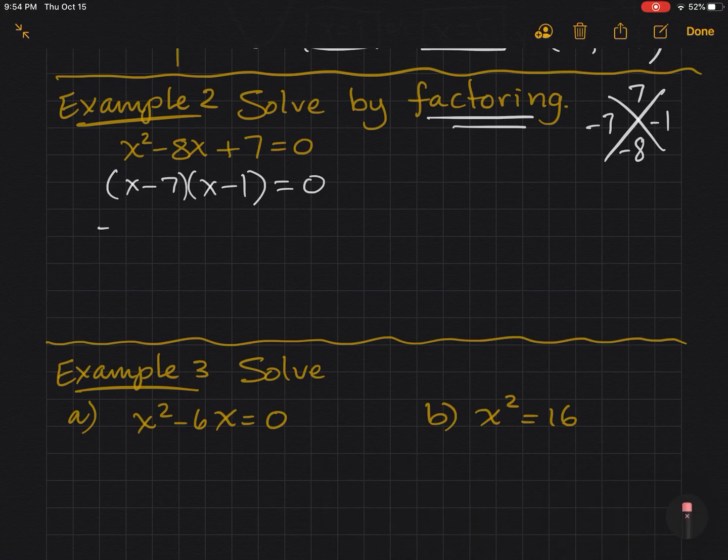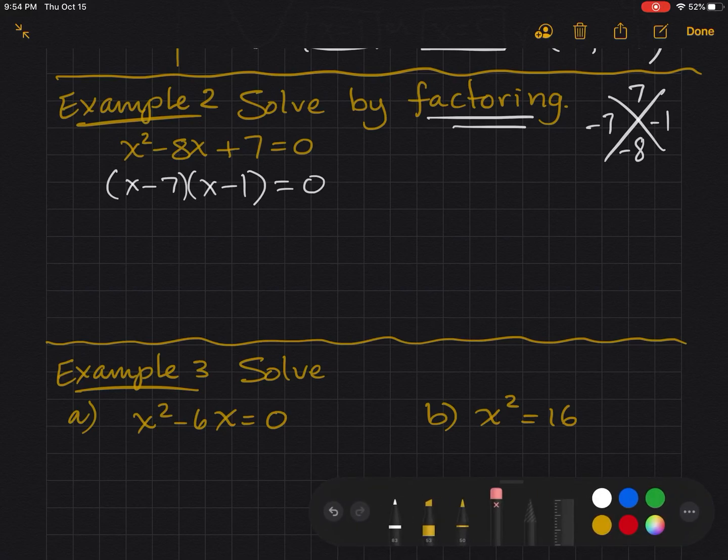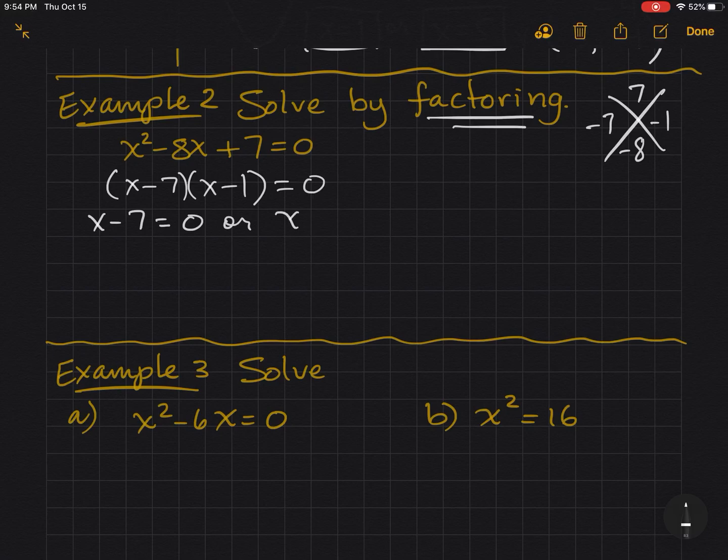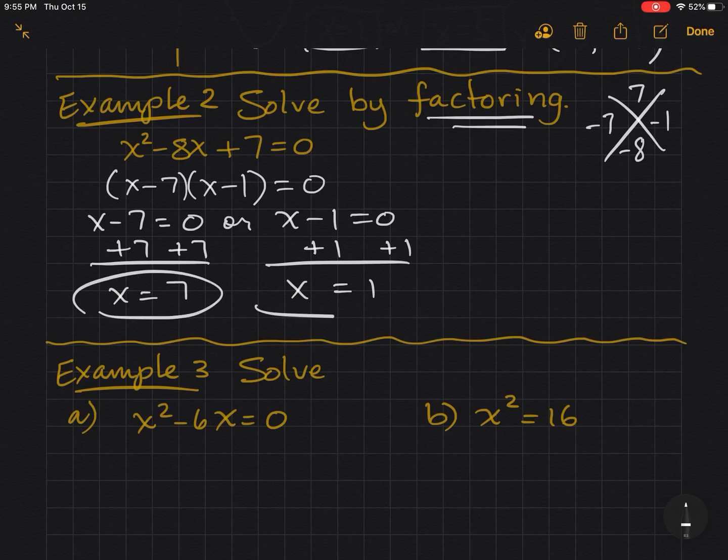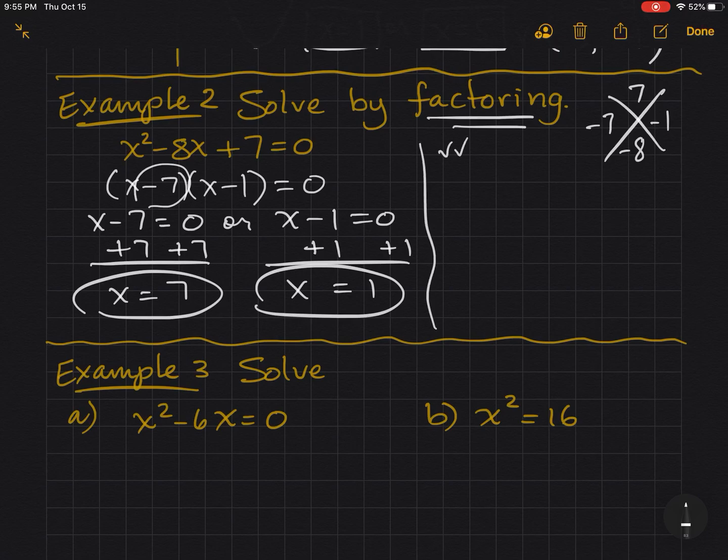Using the zero product property, x minus 7 equals 0, or x minus 1 equals 0. So we add 7 to both sides. And we see x equals 7. Add 1 to both sides. And we see x equals 1. Now, from the beginning, we could have just said, oh, go opposite. But I want to make sure you understand why we go opposite. Also, you could double check your solutions.